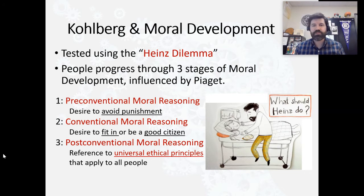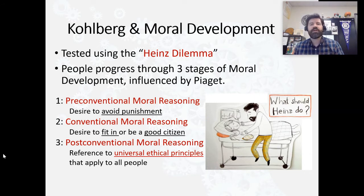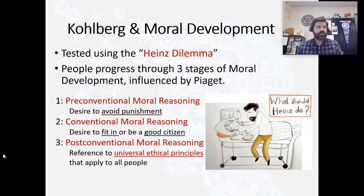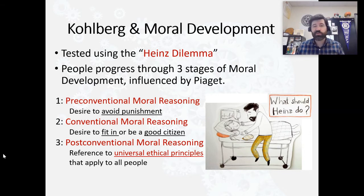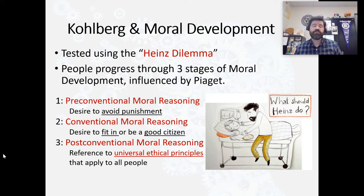It doesn't matter if you say steal the drug or not. Some children would say Heinz should steal the drug because he wouldn't want to live without his wife — notice the focus is on Heinz himself. Or they might say Heinz shouldn't steal because he could get arrested, go to prison — again, the focus is on Heinz avoiding trouble. When children get to around eight years old, as we transition from the pre-operational stage to the concrete stage, we see a transition from pre-conventional to conventional moral reasoning.